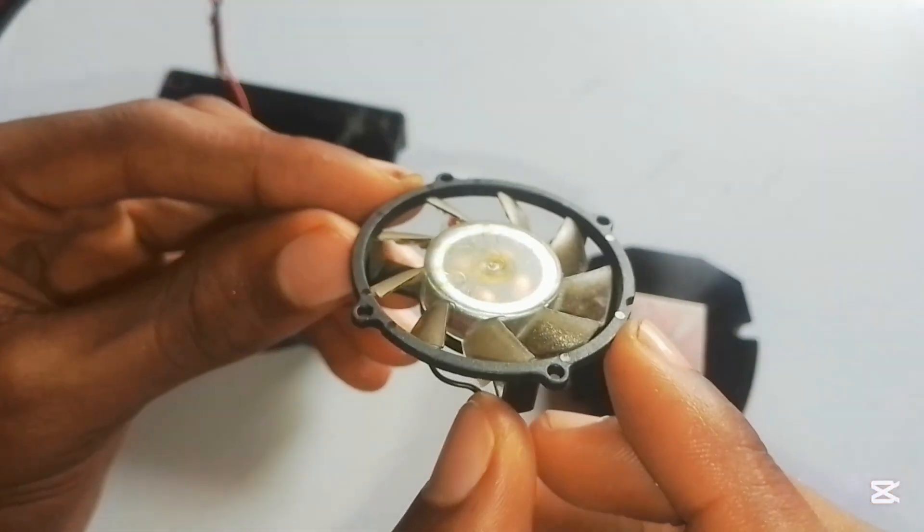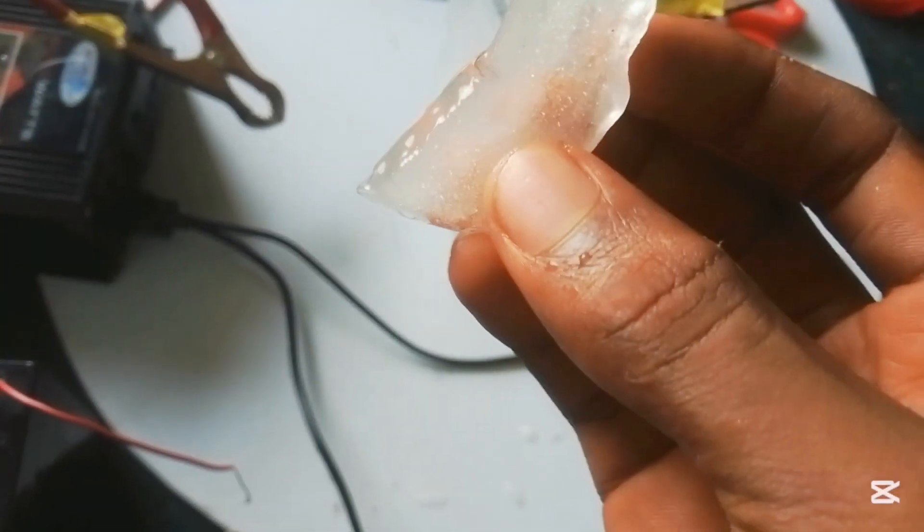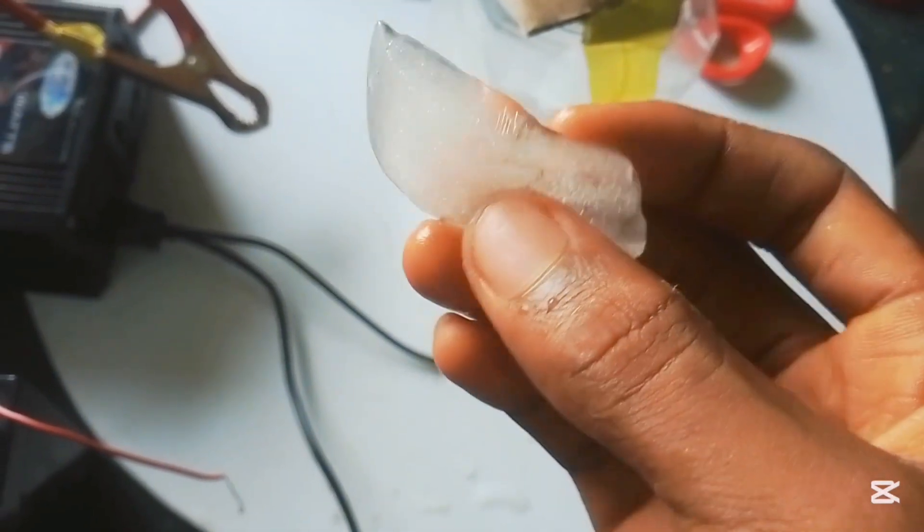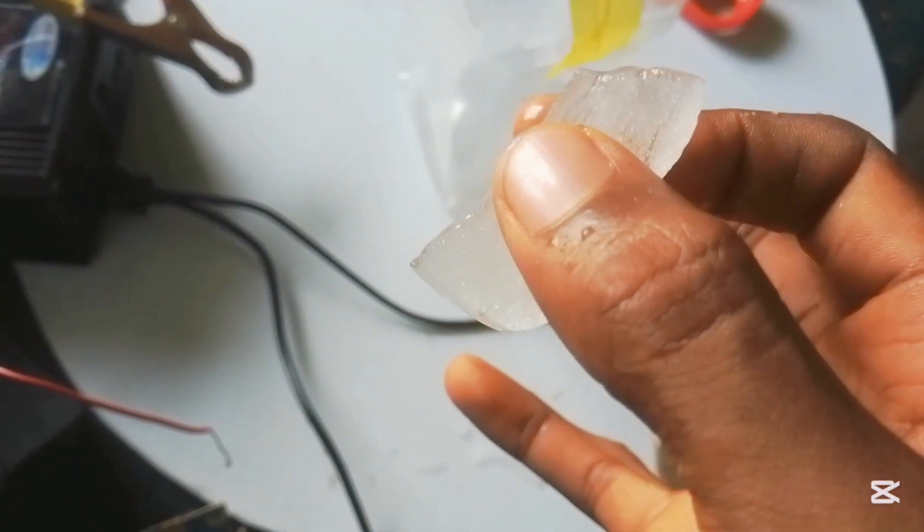So we are not using the Peltier module right now. We are just using the natural ice which we got from a deep freezer. So let's test it out and let's see if it makes a difference.